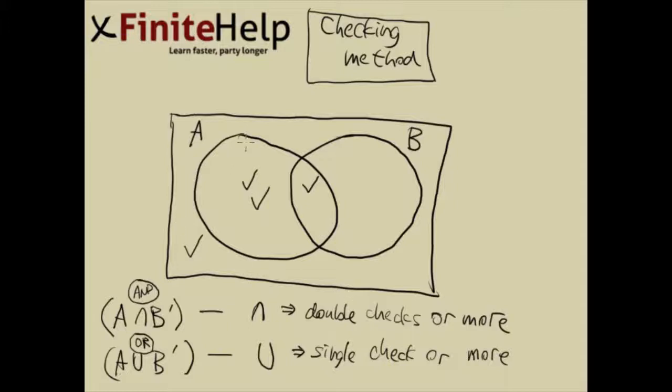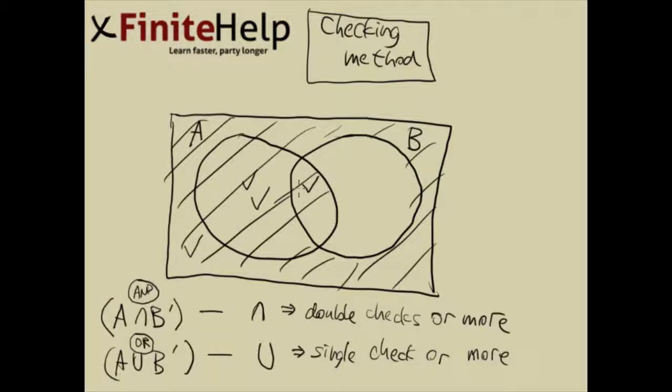If we look at this set, we see that the outside area is checked, this area is checked, and this middle area is also checked. So here, this shaded area is going to be A union B prime.